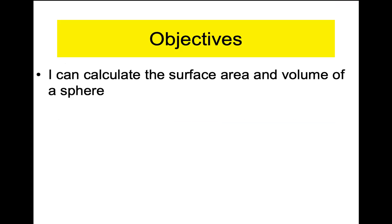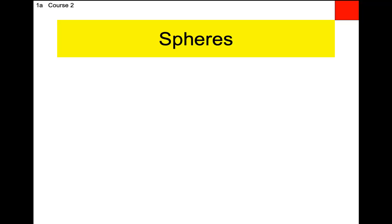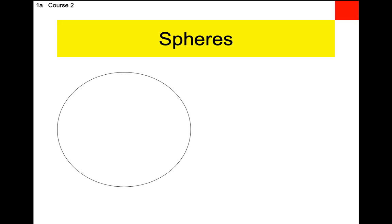All right, here we go. Write this down please. Box 1A. We've already had the definition of a circle: collection of points on a flat surface, they're all the same distance away from a given point. The only difference between that definition for circles and a sphere is that spheres are not on a flat surface. So first off, let's draw a sphere in box 1A. Draw a circle — well, that's not a sphere.